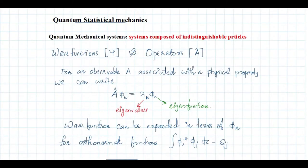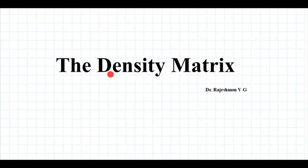In quantum mechanics, we can only make probabilistic predictions about measurement outcomes. While in statistical mechanics, the system may be in any one of the possible microstates compatible with a particular macrostate, and we can find the probability for the system being in a particular microstate. So in both quantum mechanics and statistical mechanics, there is a notion of probability. I will first explain what is the meaning of these probabilities.